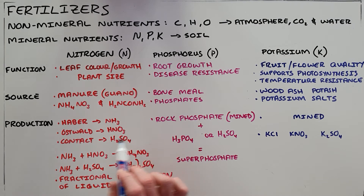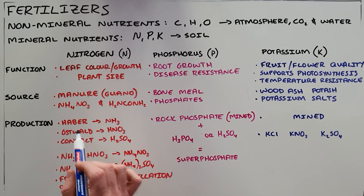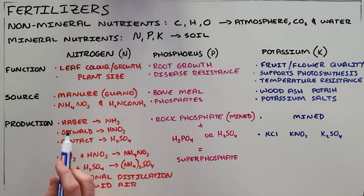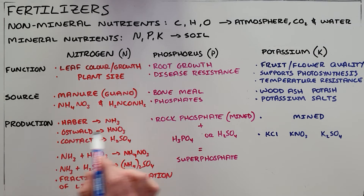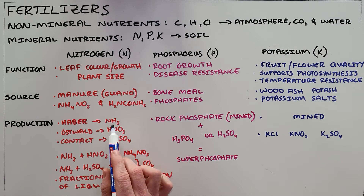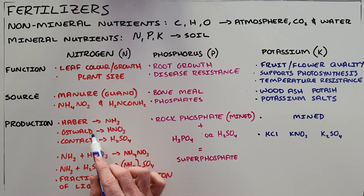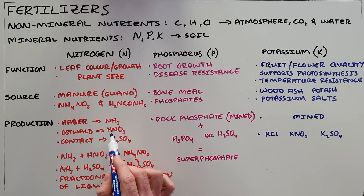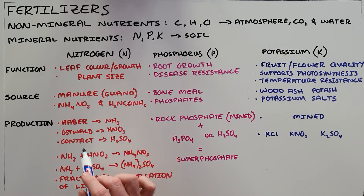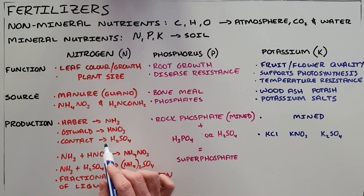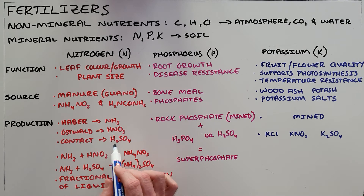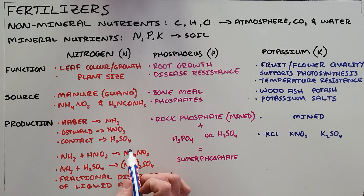The Haber process is used in the production of ammonia, the Ostwald process is used in the production of nitric acid, and the Contact process is used in the production of sulfuric acid.